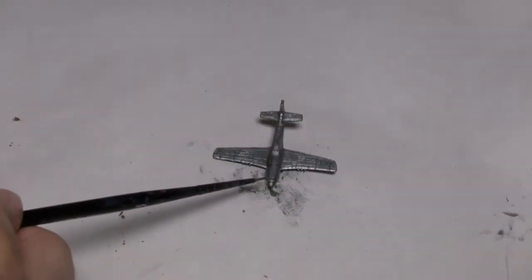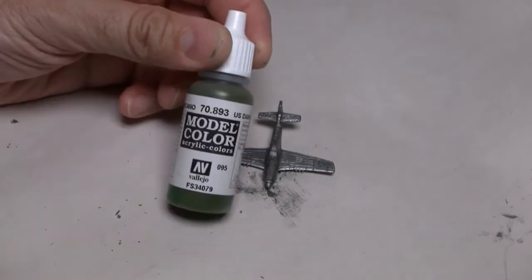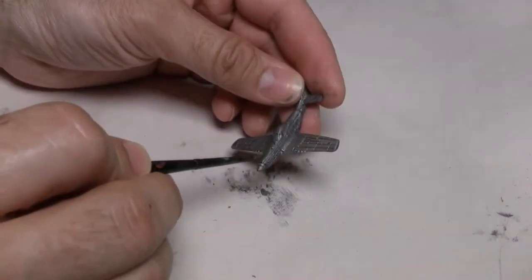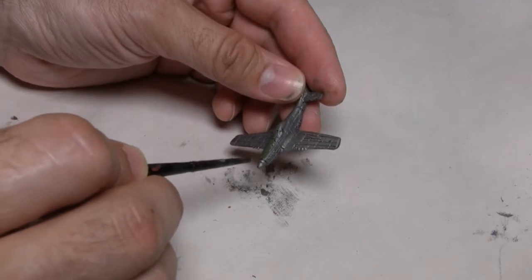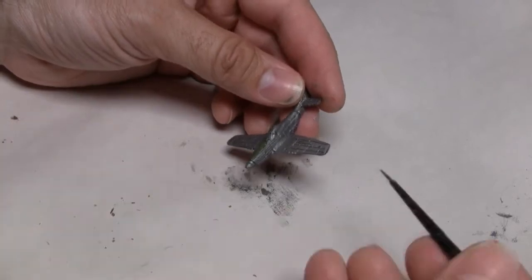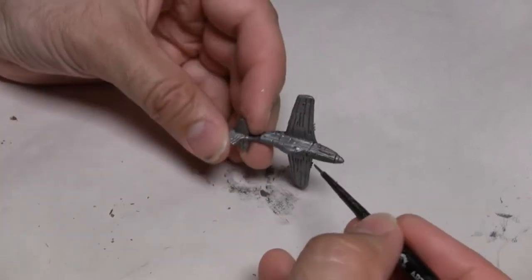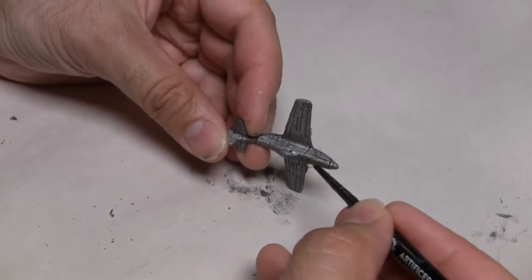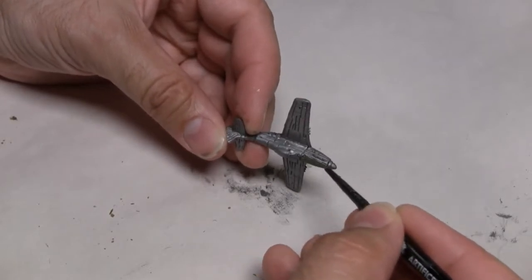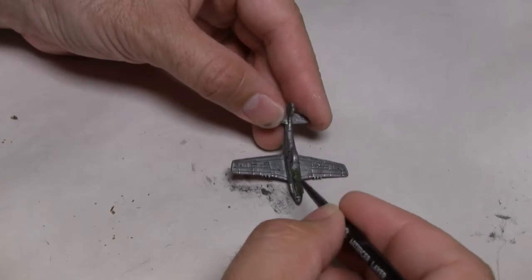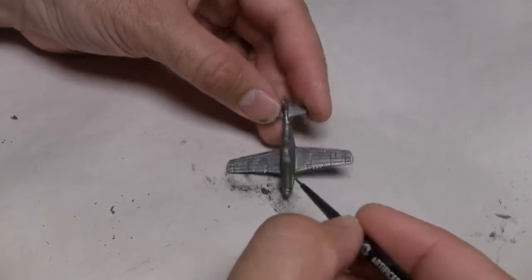Before we get to the iconic markings of the 332nd Fighter Group, we've got to paint the anti-glare panel, which was in the front half of the fuselage here between the cockpit and the propeller. For this particular section, I'm going to be using the U.S. Dark Green. This is from Vallejo Model Color, number 70.893.